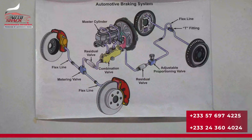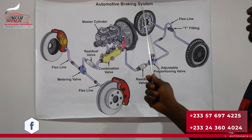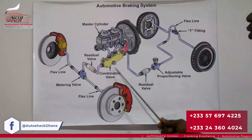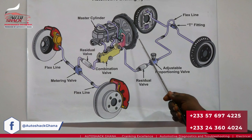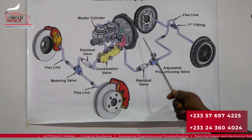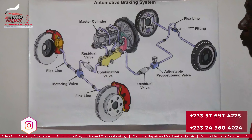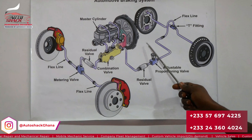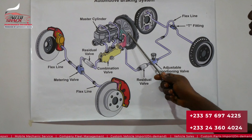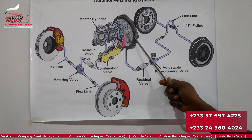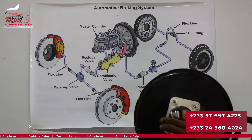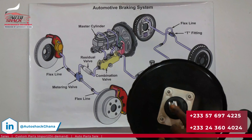We have a diagram here to show you what the automotive braking system looks like. This is not what you're going to see on every car, but just to show you. The brake pedal is connected somewhere here, and the whole work of the braking system begins as the driver applies the brake pedal. The brake pedal is connected to the brake booster via a mechanism — connected to this push rod.